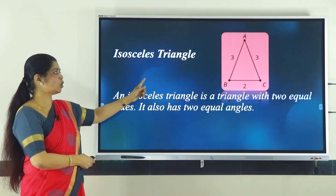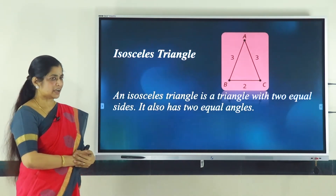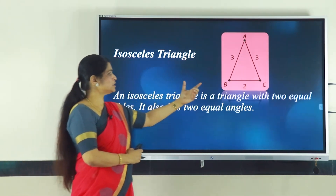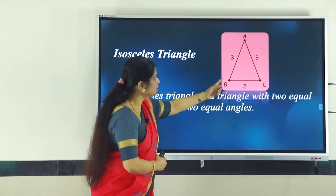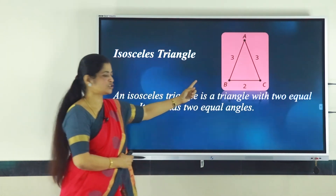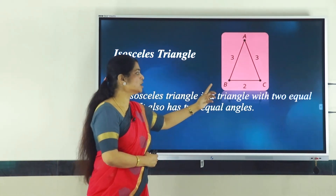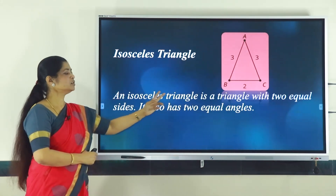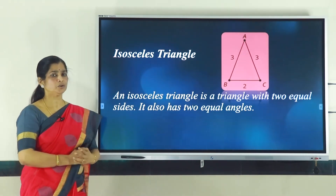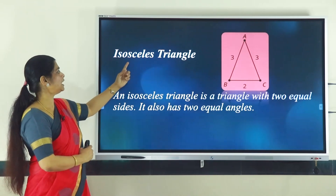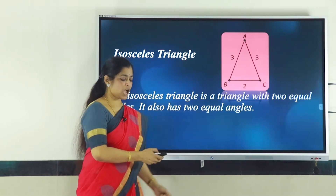Next is the isosceles triangle. A triangle with two equal sides. In the figure, you can see that side AB and side AC measure 3 centimeters each, whereas side BC measures 2 centimeters. Such a triangle, where you have two equal sides, is called an isosceles triangle. It also has two equal angles.